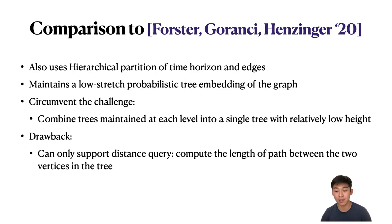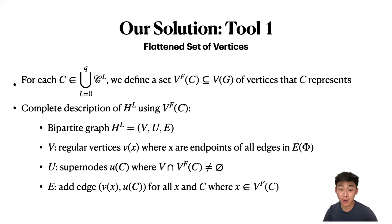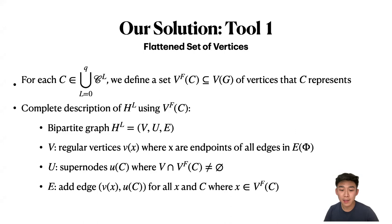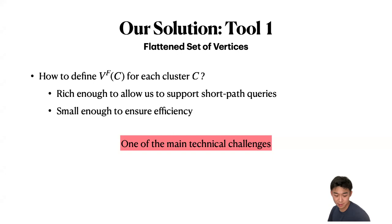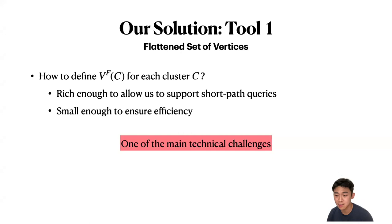I will now describe how we overcome the coordination challenge between different levels. The first tool is something called a flattened set of vertices: for every cluster C, we define a set VFF(C), a subset of vertices of G that cluster C represents. Using VFF(C), we complete the description of our level-L graph H_L. The set of regular vertices V is the set of endpoints of all edges in E(phi), and the set of supernodes includes U_C for clusters C such that V intersects with VFF(C). For edges, we add an edge between v_x and U_C for all x in C where x belongs to the flattened set. Defining this flattened set correctly — rich enough to support short path queries yet small enough for efficiency — is one of the main contributions of our paper.